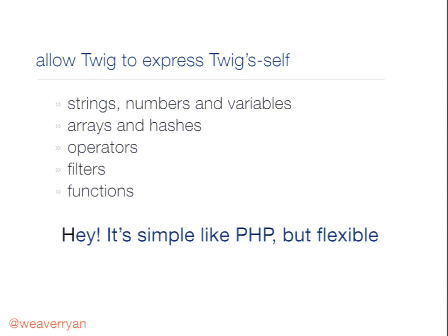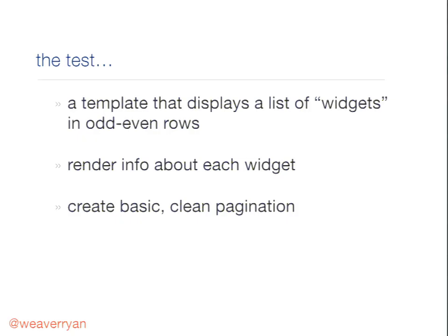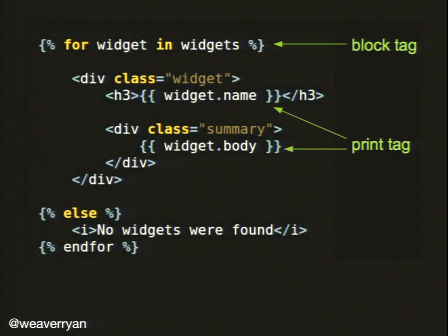Let's step up to a challenge. Imagine we have an array of widget objects — each has a name property and a body property — and we're going to pass an array of them into a Twig template. We're going to iterate over them, add odd/even rows, and create some pagination. In Twig, there's no 'for' and 'foreach' — it's always 'for.' The syntax is 'for widget in widgets' — the opposite order from PHP's 'foreach widgets as widget.' Inside the loop, we access widget.name and widget.body.